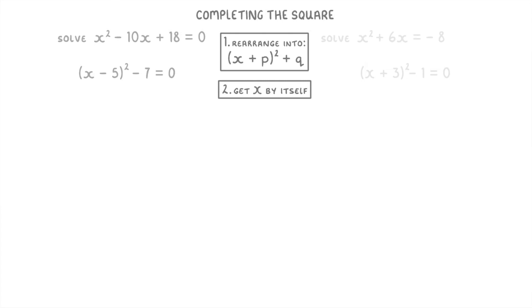So for this one on the left, x minus 5 squared minus 7 equals 0, the first thing we want to do is add 7 to both sides, to get x minus 5 squared equals 7.